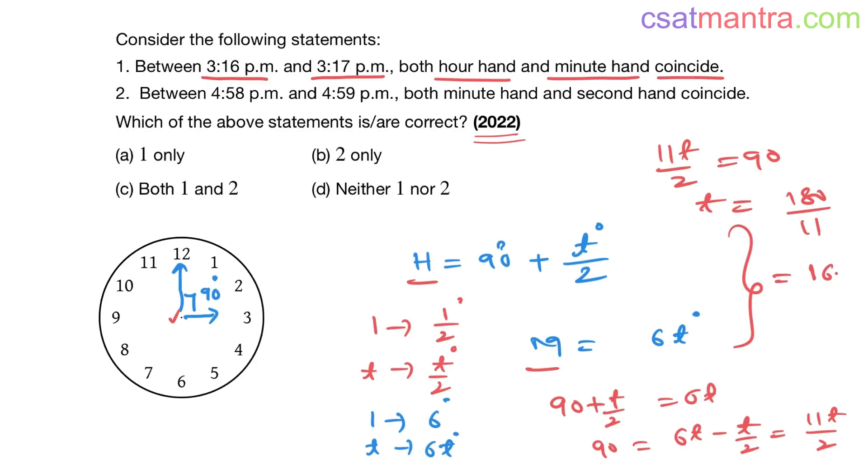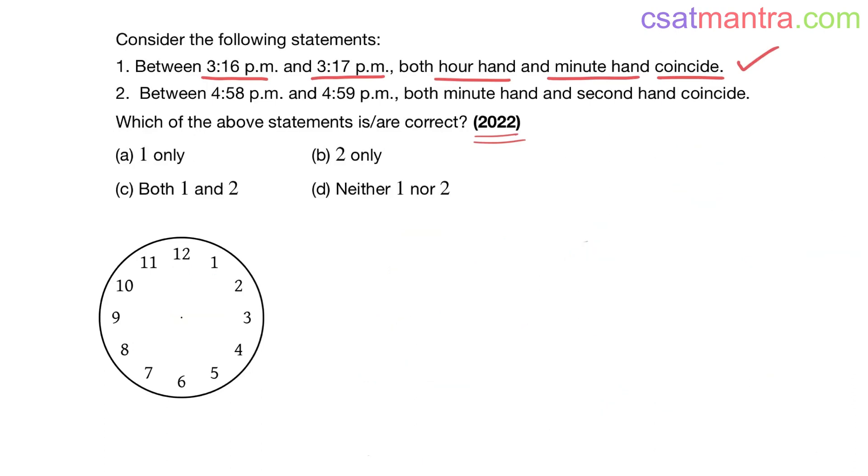So 16 point something is coming. When time is between 16 and 17 minutes, 16.3 means it's between 16 and 17 minutes, right? So hour hand and minutes hand will coincide. Yes, this statement is true. See, when they coincide, angles made by minutes hand and hour hand would be equal from this 12 o'clock. So we equated them and found out t. It's coming as 16 point something, so this is between 16 minutes and 17 minutes. So statement one is true.